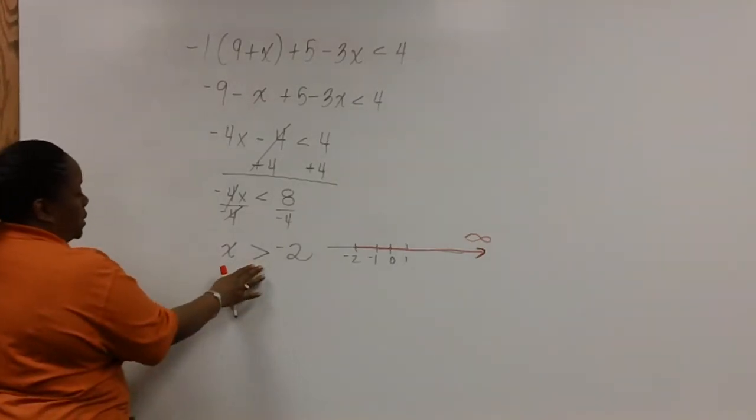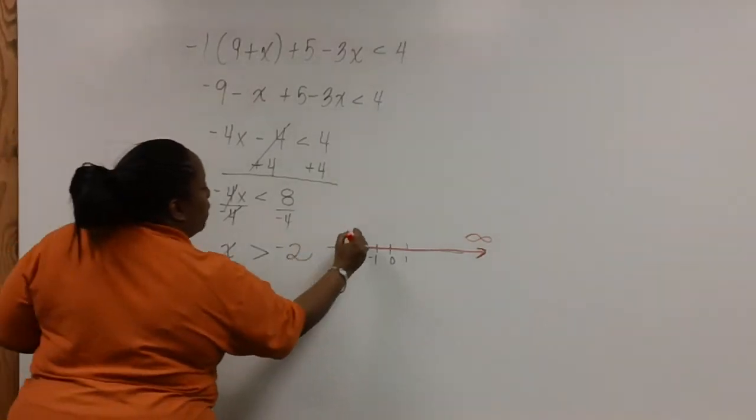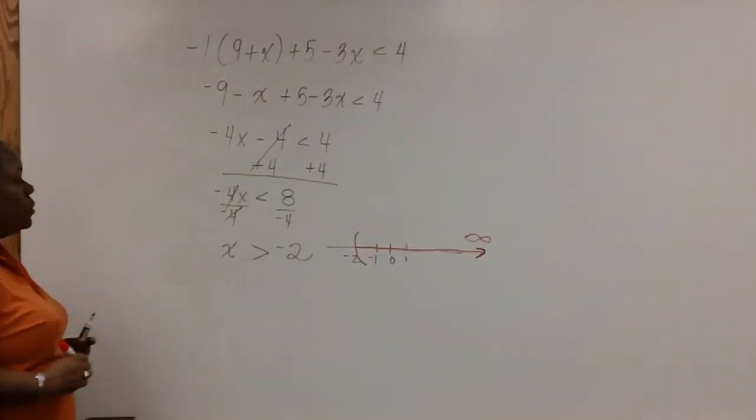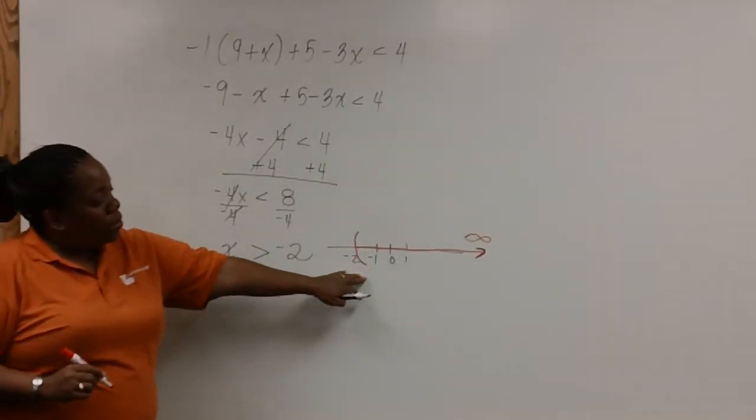And because it's a greater than sign, we'll have a parenthesis on negative 2. So this is how the graph looks.